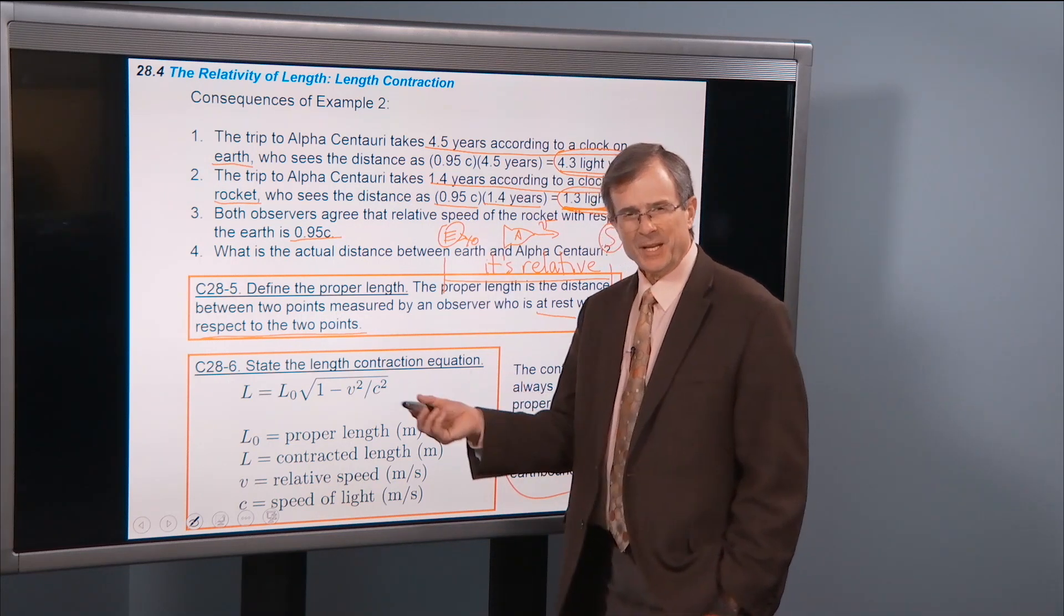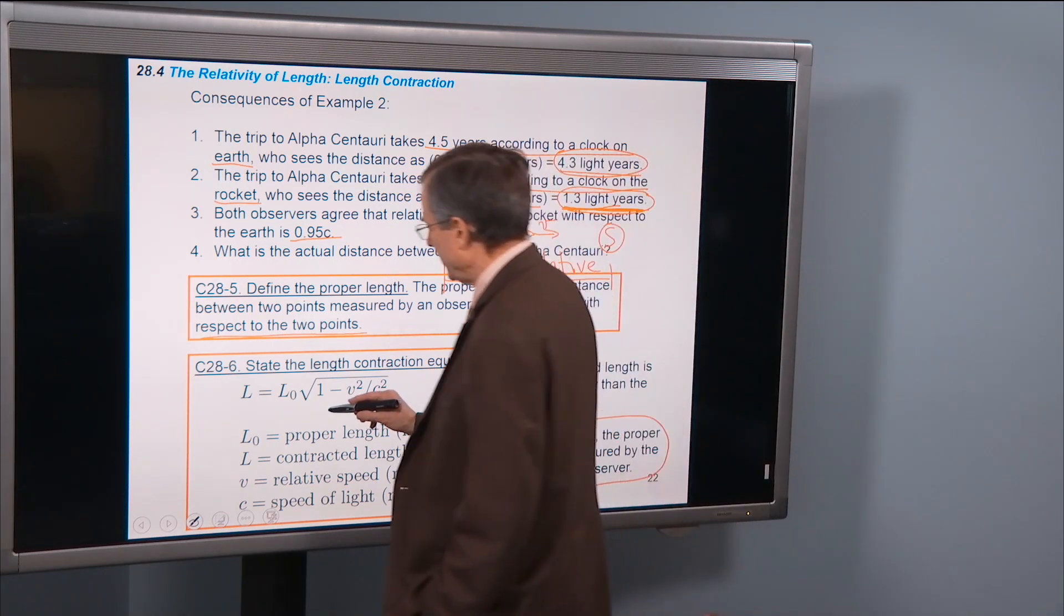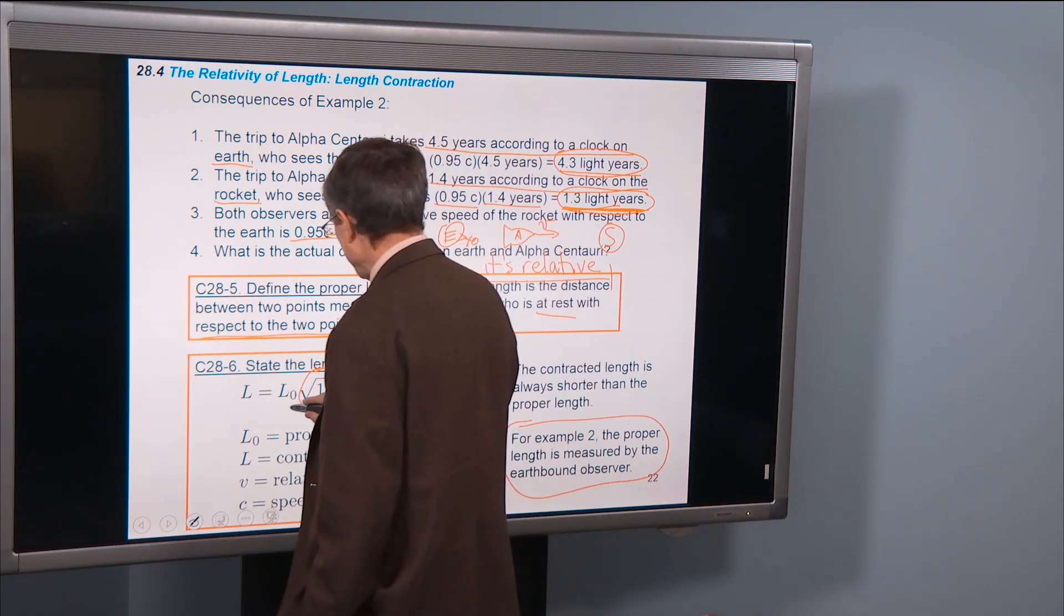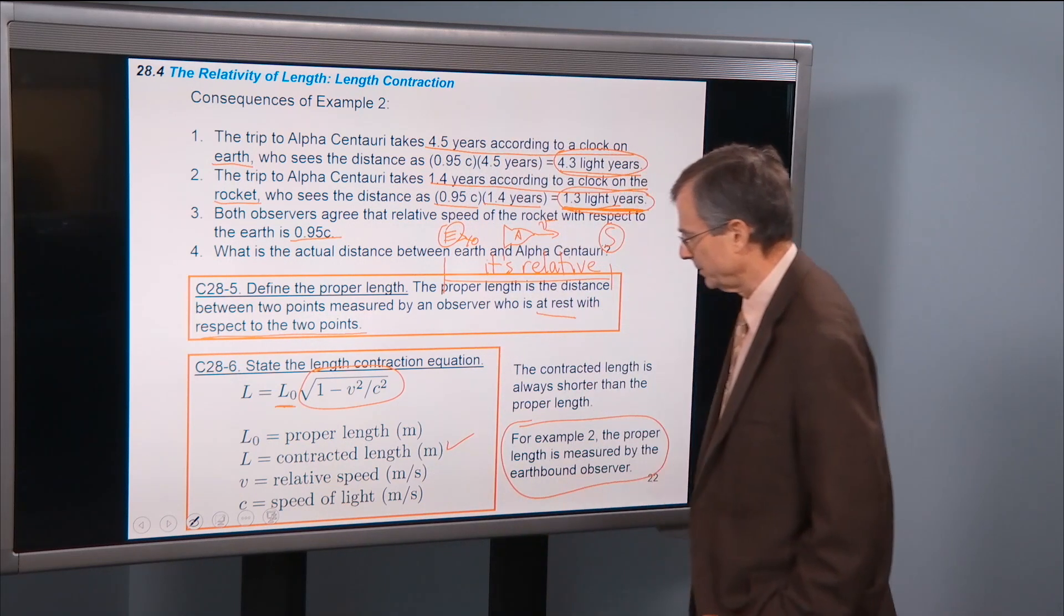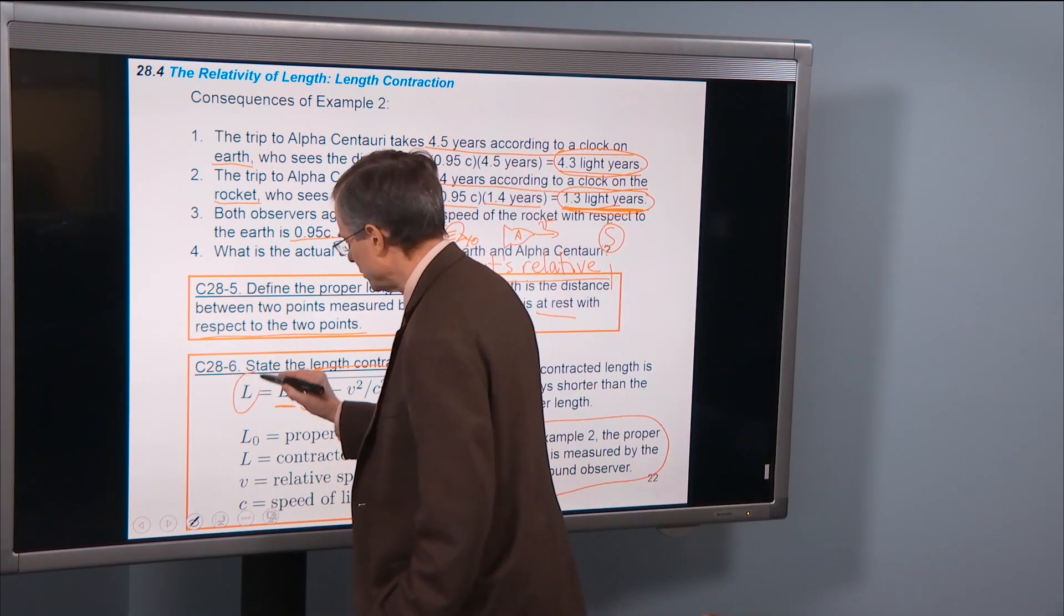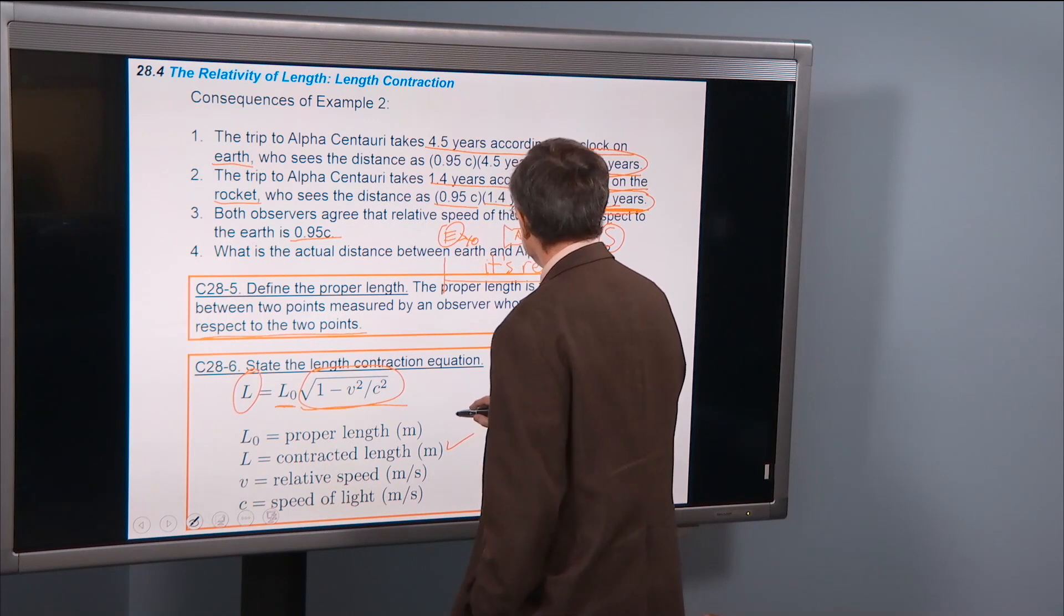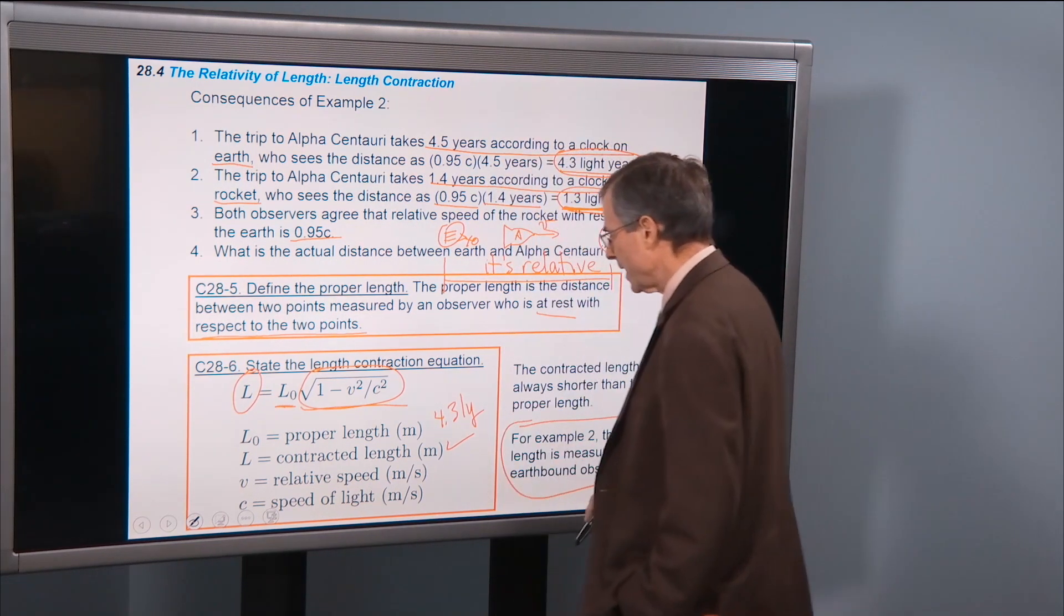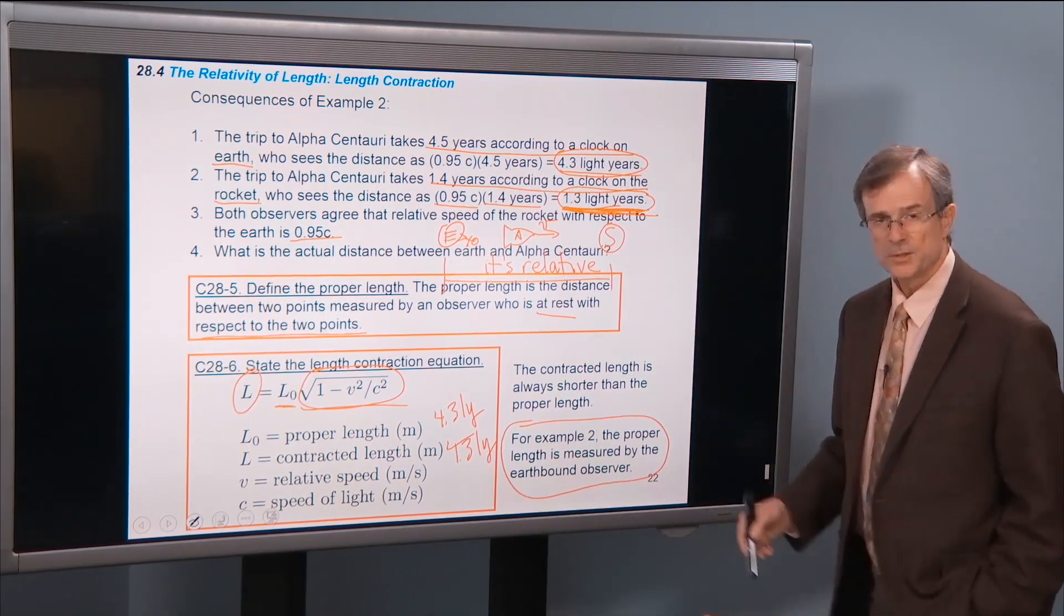So that same factor, that 1 minus v squared over c squared that cropped up with the proper time, also crops up with the proper length, except now instead of dividing by this ugly square root, we're going to multiply by it, so that you take the proper length, whatever that is, and then multiply that by 1 minus v squared over c squared, and that gives the contracted length. It'll give a number that's less. So the proper length in this particular example 2, the proper length is 4.3 light years. The contracted length is this 1.3 light years for this particular example.